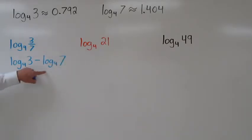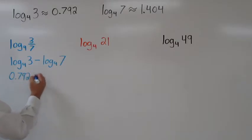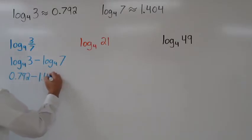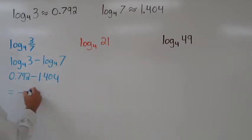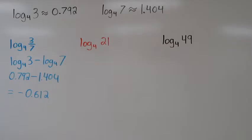We know these two values because they're given above. So now all we have to do is subtract. 0.792 minus 1.404 equals negative 0.612. So log base 4 of 3 sevenths is negative 0.612.